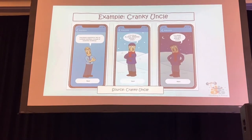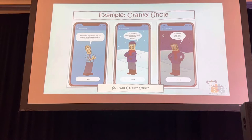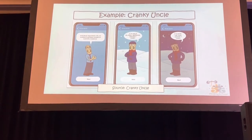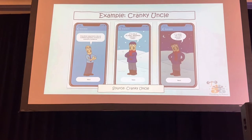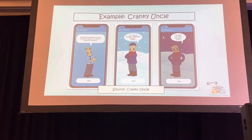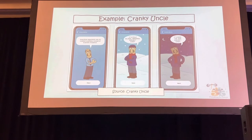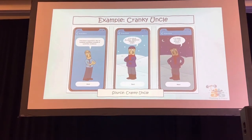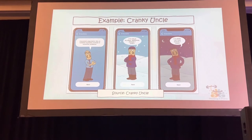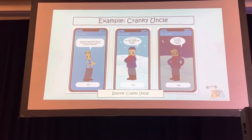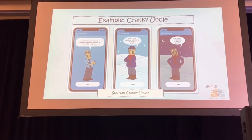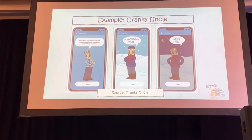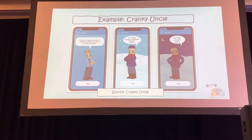This example shows what's called parallel argumentation. A lot of these science topics are really complicated, and you have to understand the science deeply to engage with them. But using something like parallel argumentation helps you see the techniques of denial without needing to understand the science. For example, saying 'it's cold outside, so there's no climate change' would be like saying 'well, it's dark, so the sun doesn't exist.' It's a humorous way of creating a parallel argument that shows why that argument isn't a good argument.